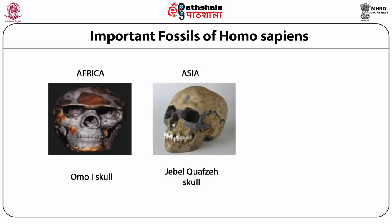Fossil sites of modern human populations in Asia are mainly located in Israel, China, and Indonesia. In Israel, anatomically modern human fossils almost contemporary with Neanderthals were discovered from Qafzeh and Tabun, dated at 120,000 to 92,000 years old. Most of the fossil remains show modern characteristics; however, a few representative fossils have pre-modern characteristics. Such early dates raise questions against the theory of complete replacement and support the view that modern humans and Neanderthals coexisted.